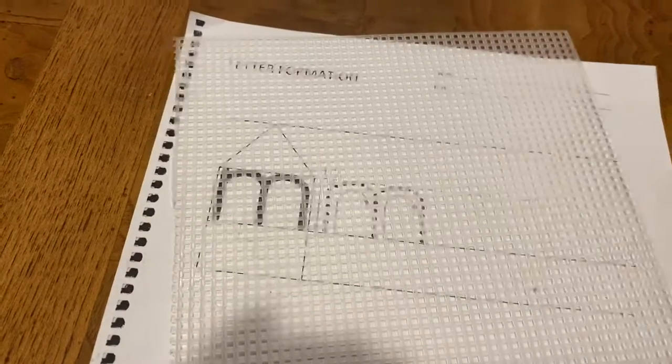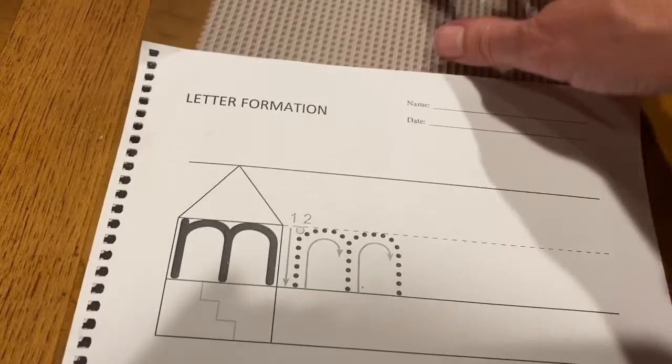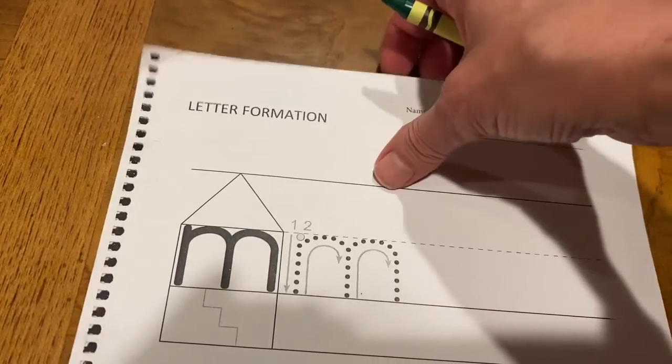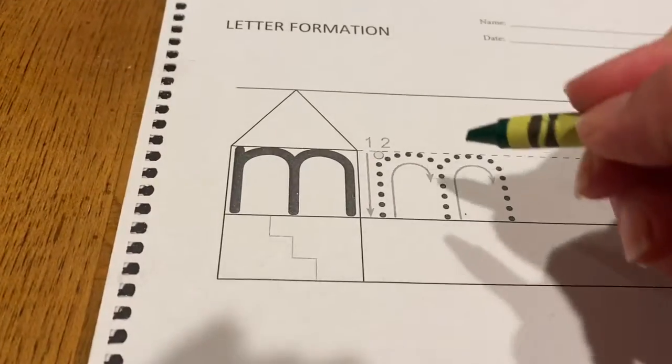Turn to page 23 in your handwriting book. Place the bumpy screen behind page 23 and here we are. We're going to start.